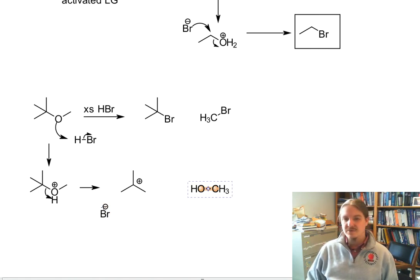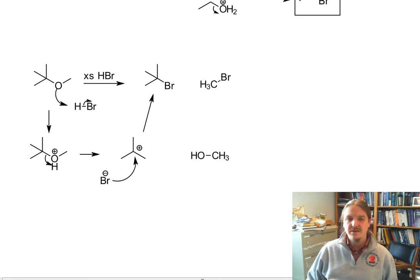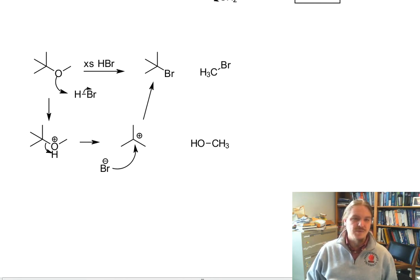And it's going to be that tert-butyl cation that goes on and reacts with the bromide anion, now a straight up SN1 reaction to make the tert-butyl bromide.